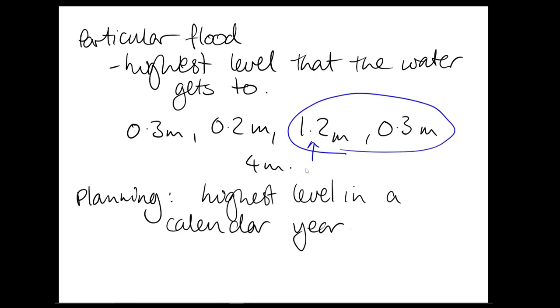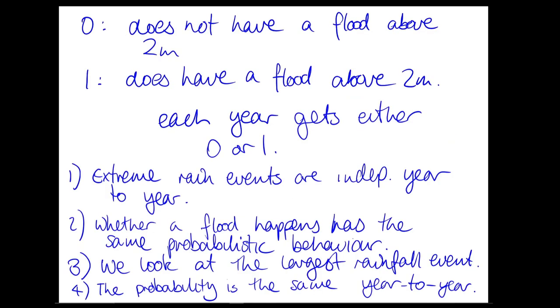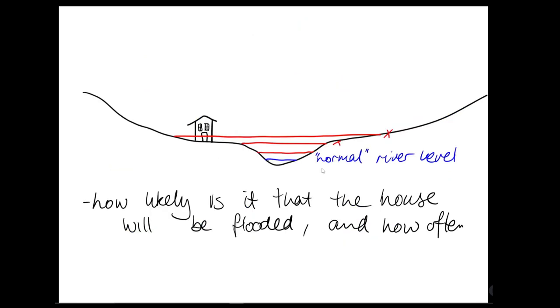So the first assumption is that extreme rain events are independent year to year. This means that from one year to the next, there is no relationship in the occurrence or intensity of extreme weather events. Two, whether you see a flood of 2 metres or more has the same probabilistic behaviour. This is termed as having the same distribution. Three, we are interested in the largest rainfall event per year. And lastly, the probability of an extreme rain event is the same year to year. This is slightly different to 2 for technical reasons. Basically, you can have a probability that differs but still have the same distribution behaviour.